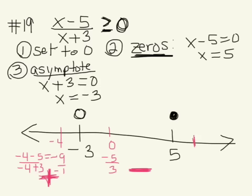Then I want to test the value on the right of 5. So let's test 6. So 6 minus 5 gives us 1, and 6 plus 3 gives us 9. So anything to the right of 5 is going to give us a positive solution.